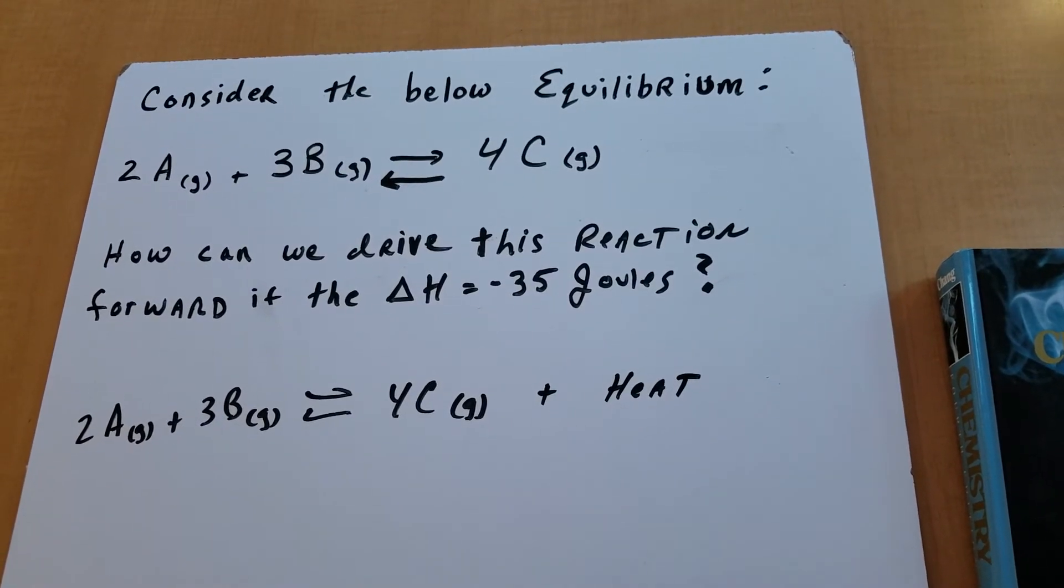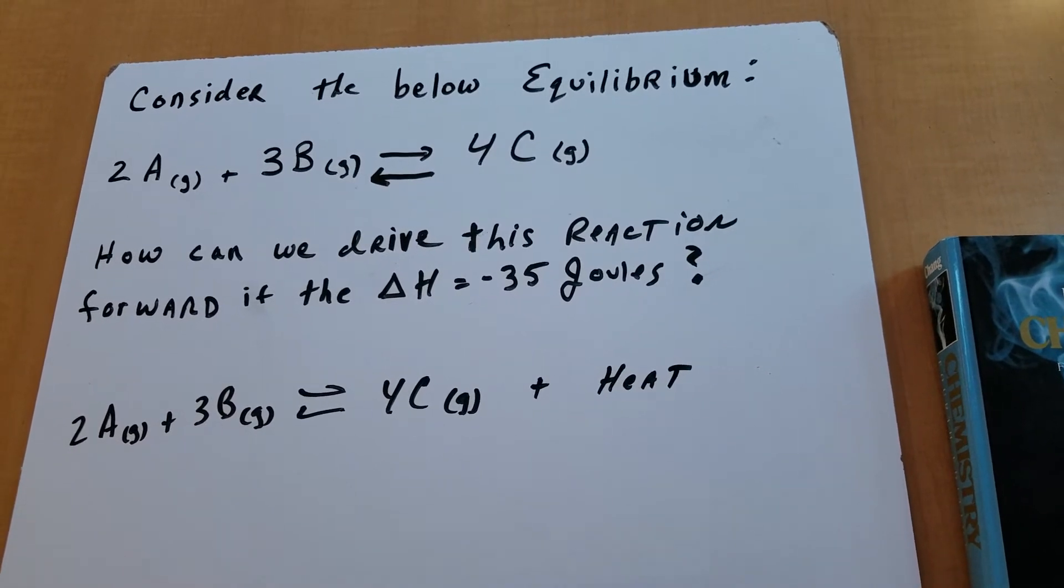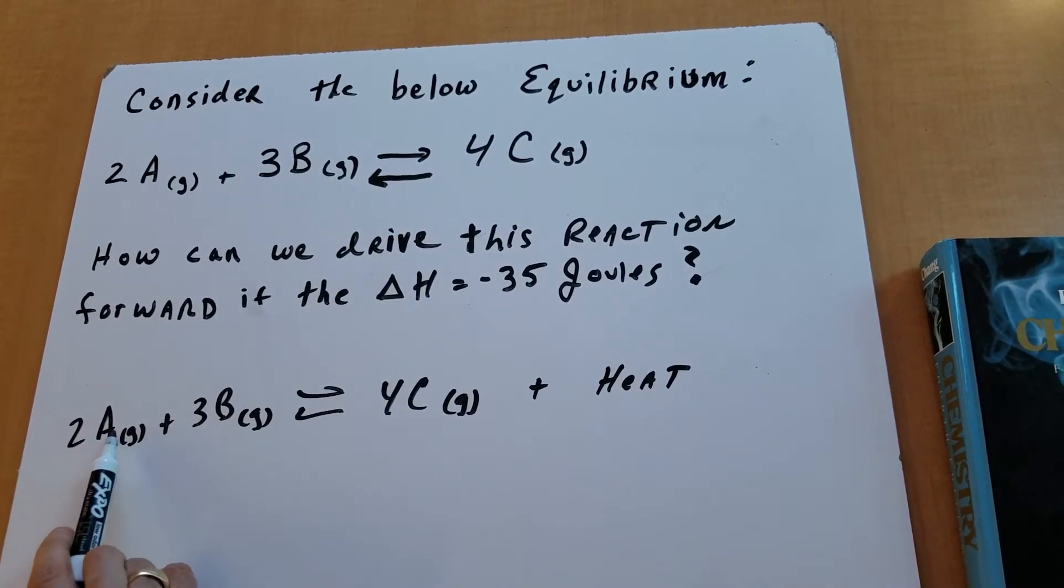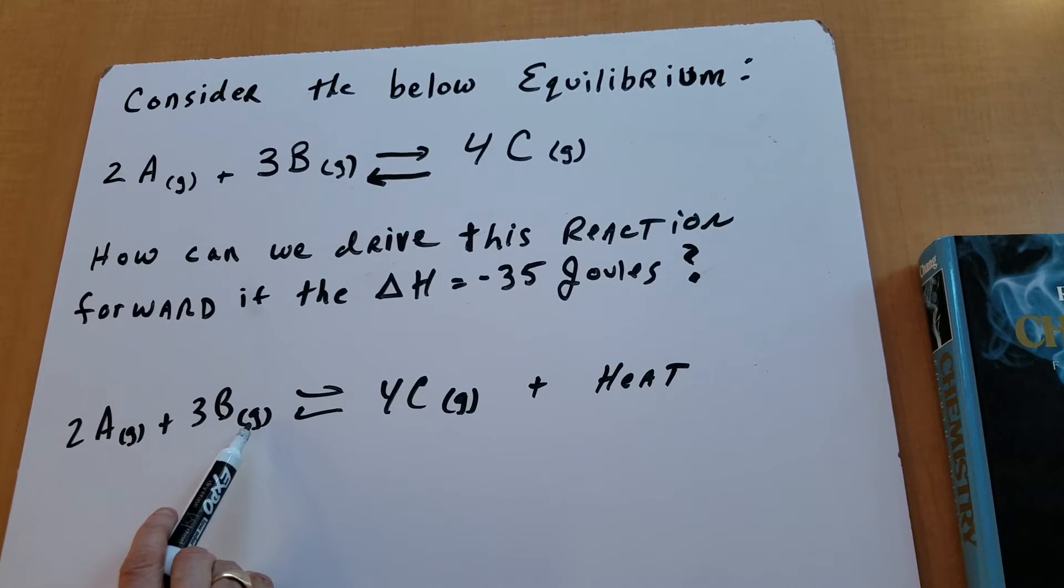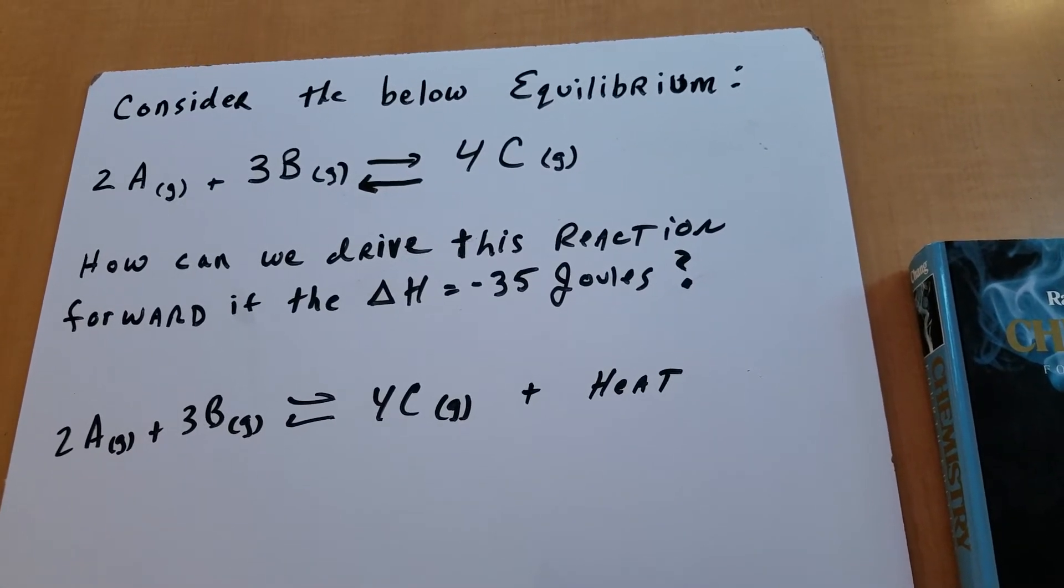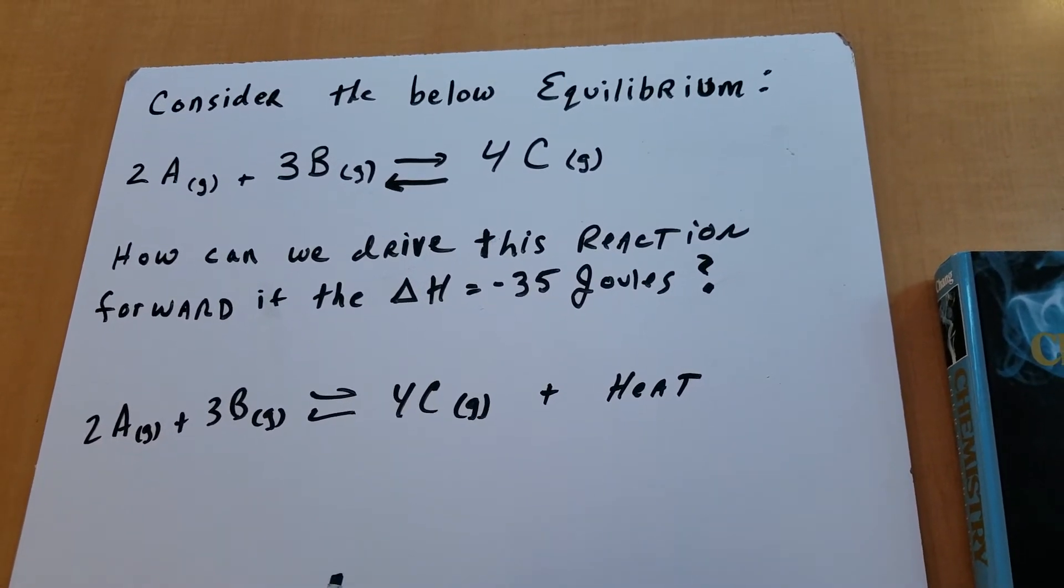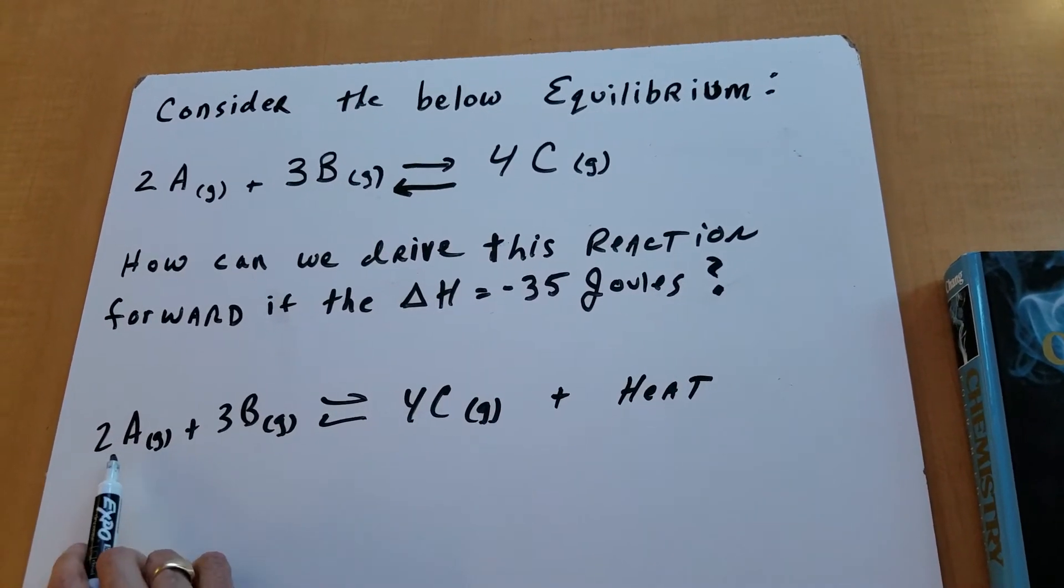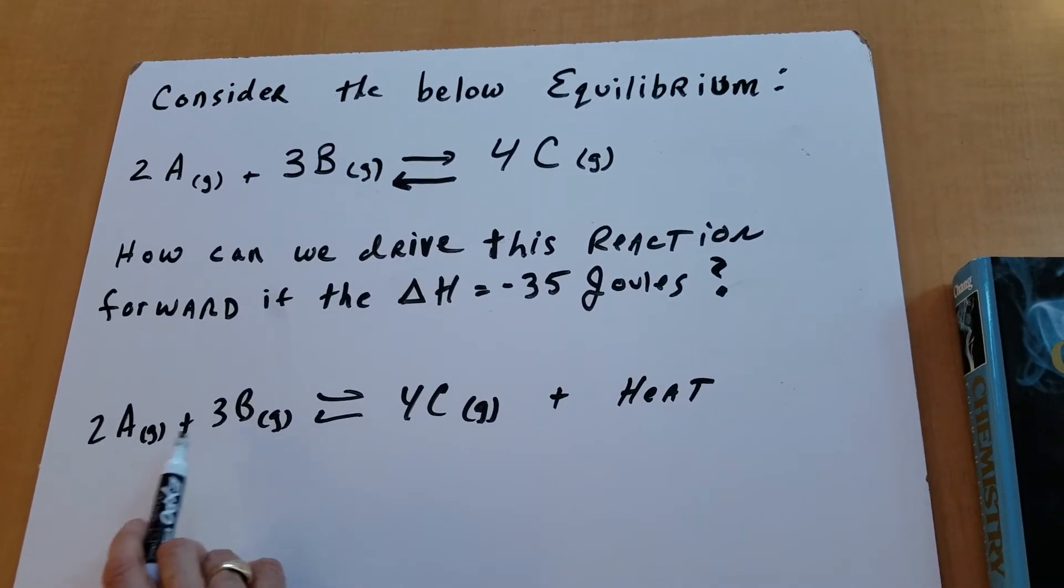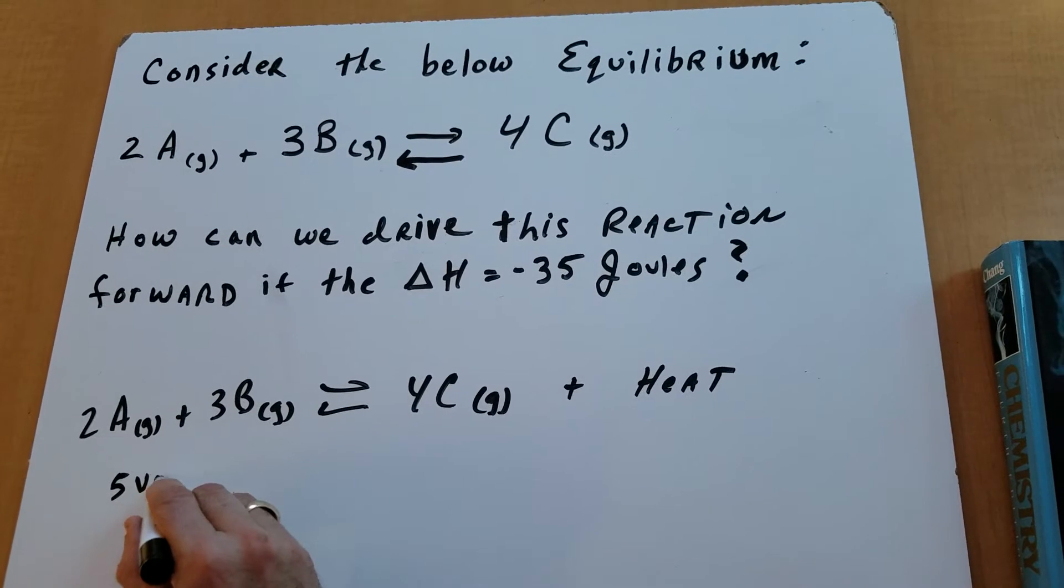The next thing that I do is I count up all the gas molecules or moles. So you have 2 moles of A and 3 moles of B gives you 5 moles. Now, if you remember, PV equals nRT, so that means moles is proportional to volume.